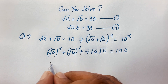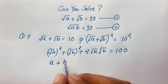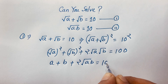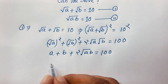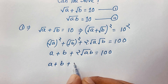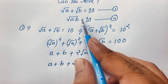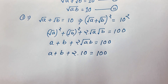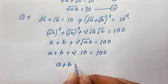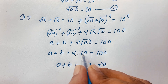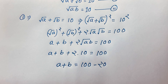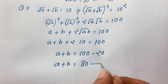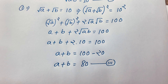Now I can see here a plus b, and here is 2√(ab) equals 100. Since √(ab) = 10, we have 2 times 10 equals 20. Moving 20 to the other side it will be negative 20, so a plus b equals 80. This is our third equation.